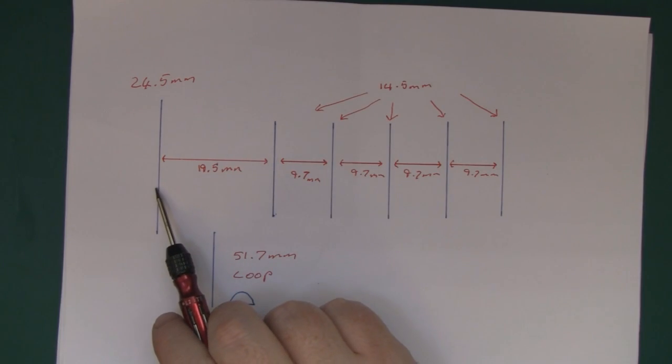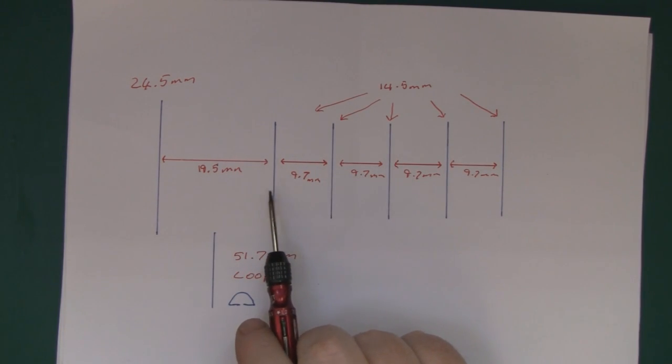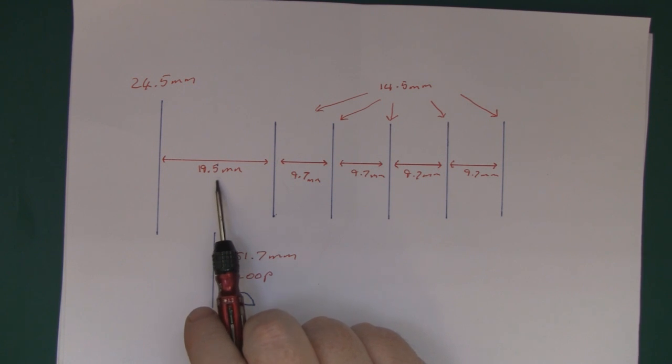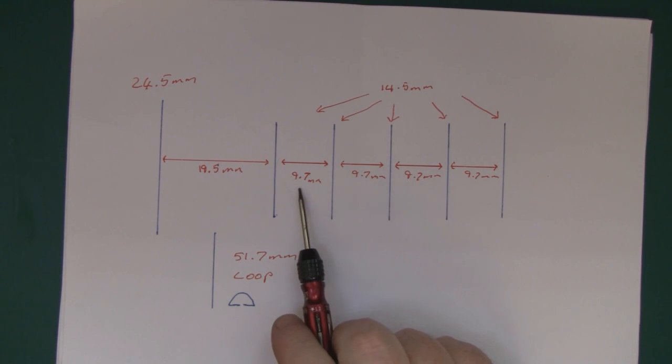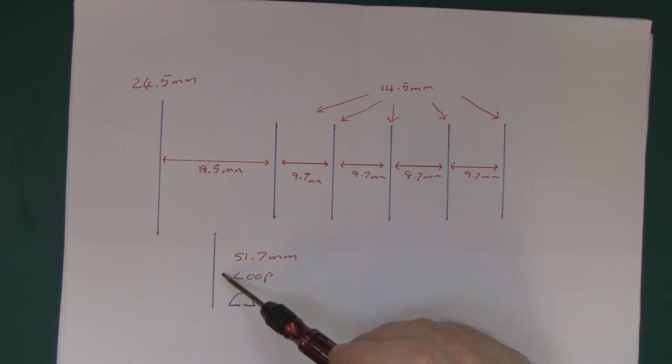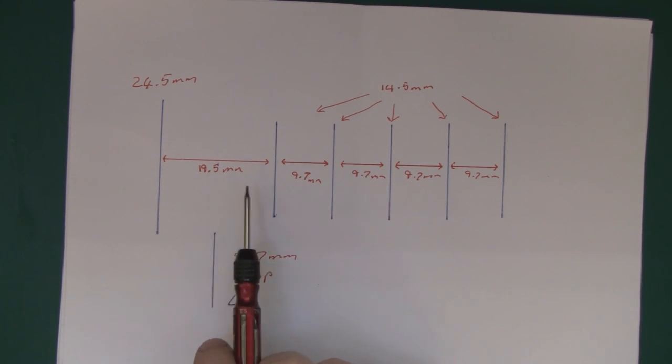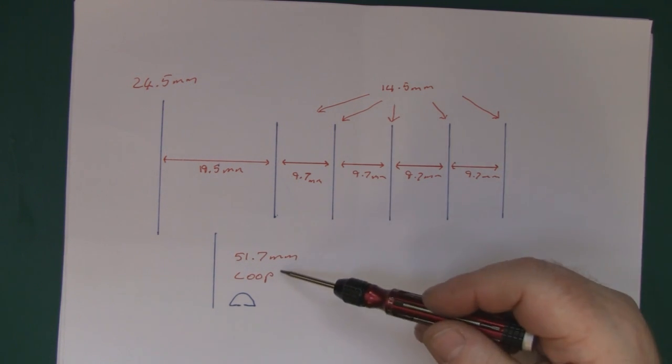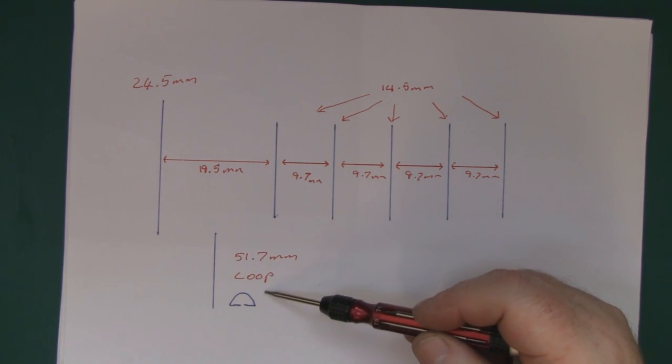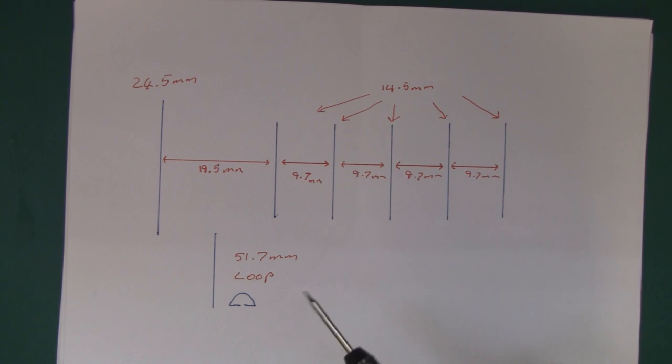The distance from the back reflector to the first parasitic element is 19.5 mm, and then the rest of the parasitic elements are spaced out at 9.7 mm. We're also going to have a driven element dead center in between the back reflector and the first parasitic element. The main driven element is going to be a loop driven element, one full wavelength at 5.8 GHz, which is 51.7 mm.